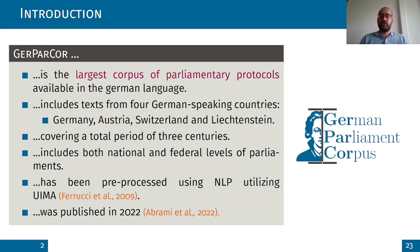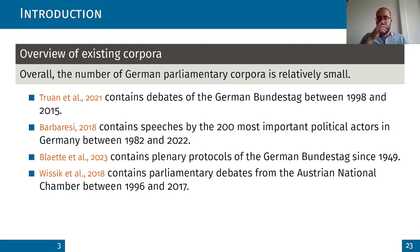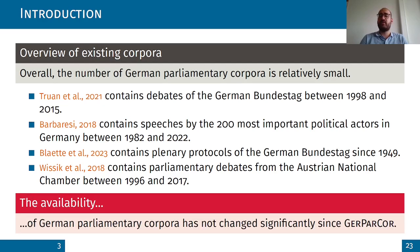The GAEPA Core was published in 2022 and is the largest corpus of parliamentary protocols available in the German language, which includes German-speaking countries like Germany, Austria, Switzerland, and Liechtenstein. It covers three centuries of periods at the national and federal levels of parliaments, and all the data are available in the UIMA format, pre-processed using NLP. Here you have an overview of existing corpora which are relatively small — they cover only small periods or focus on only one area, and this doesn't change after the appearance of the GAEPA Core.